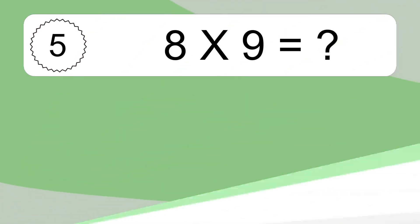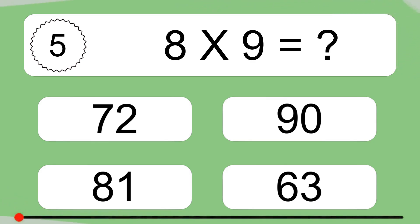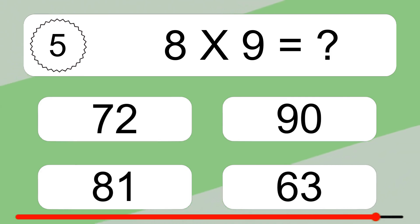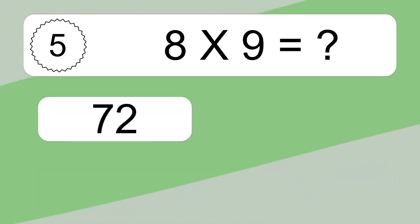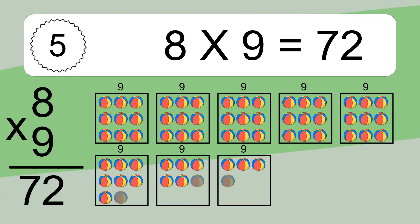8 times 9 equals what? 8 times 9 equals 72.